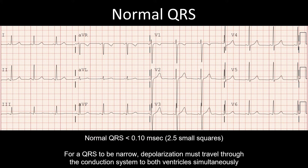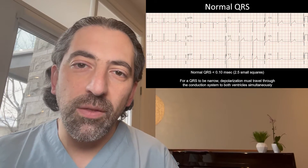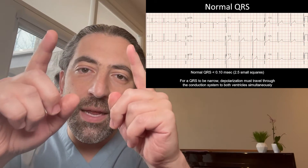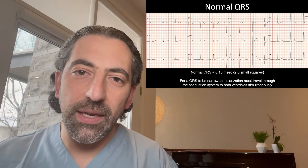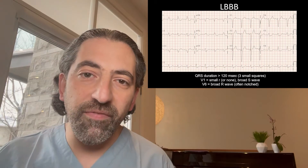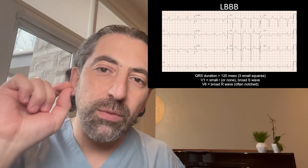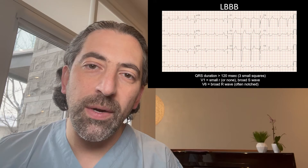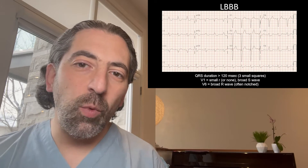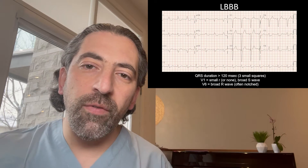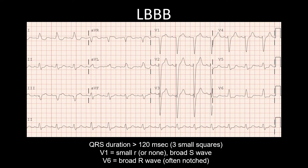When the QRS complex is normal, the duration is less than 0.1 seconds, which is less than two and a half small squares. For the QRS to be narrow, depolarization must proceed through the AV node, through the right bundle and left bundles, through the His-Purkinje system, and depolarize both ventricles simultaneously. In left bundle branch block, depolarization spreads through the right bundle and then slowly depolarizes the left ventricle via muscle-to-muscle conduction, which widens the QRS and shifts the overall vector to the left, creating a negative complex in lead V1 and a positive complex in lead V6.